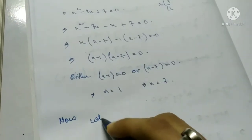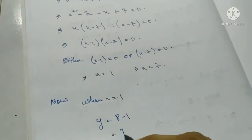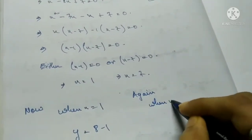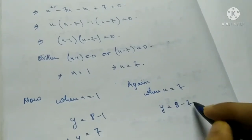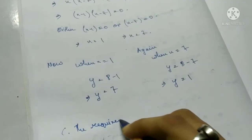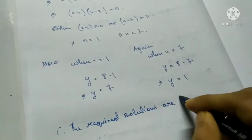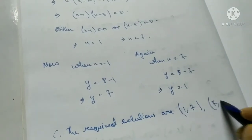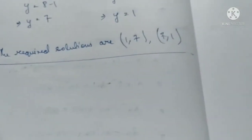When x equals 1, y equals 8 minus 1 equals 7. When x equals 7, y equals 8 minus 7 equals 1. Therefore the required solutions are (1, 7) and (7, 1). Checking the back answer: 1, 7 and 7, 1 — correct.